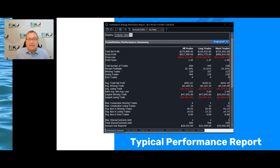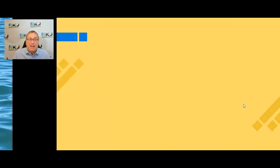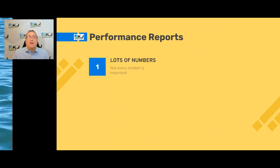This is TradeStation — this is a typical performance report. There are a lot of numbers to it, and this is just one page. If you go across the bottom, you see the trade analysis page, the trade list page, the return page, the graphs. There's just tons of stuff to it and it can get overwhelming. Lots of numbers, and most of them probably won't mean anything to you — they're not all equally important.